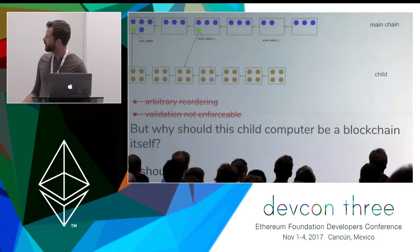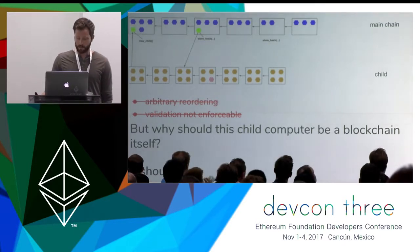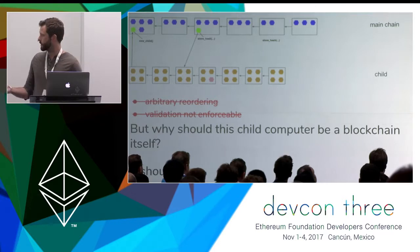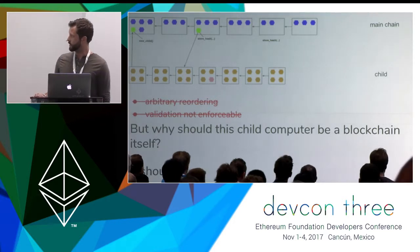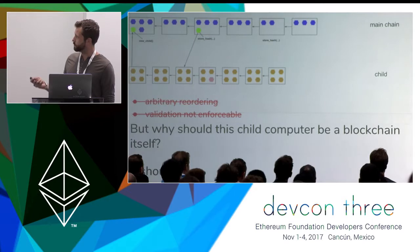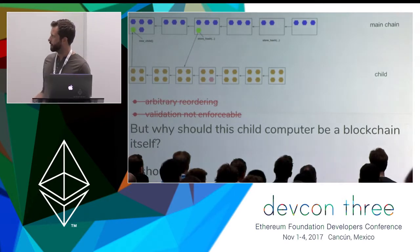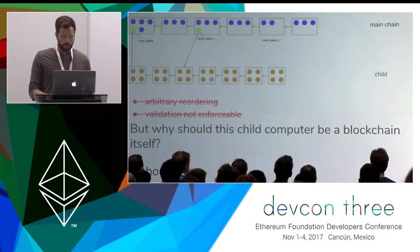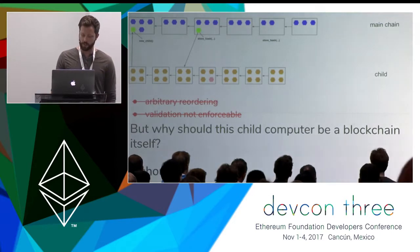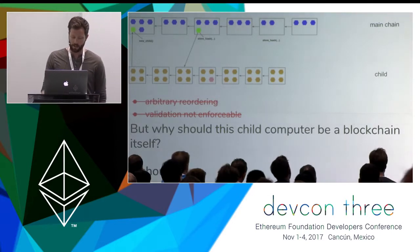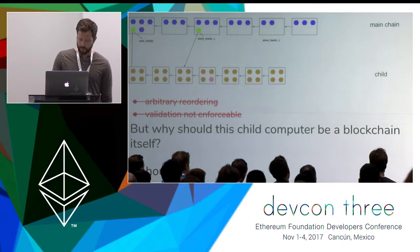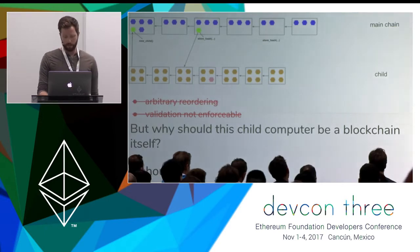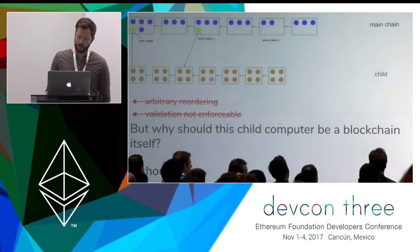And if fraud is detected, at that point all the users of this child chain can submit proofs of their data and basically just exit back to the main chain. Assuming we can build a robust Merkle computer network, we approach the same security guarantees of mainnet. It does take longer to reach statistical finality, but on the plus side, I see no reason why this child chain wouldn't be able to support thousands of transactions per second.